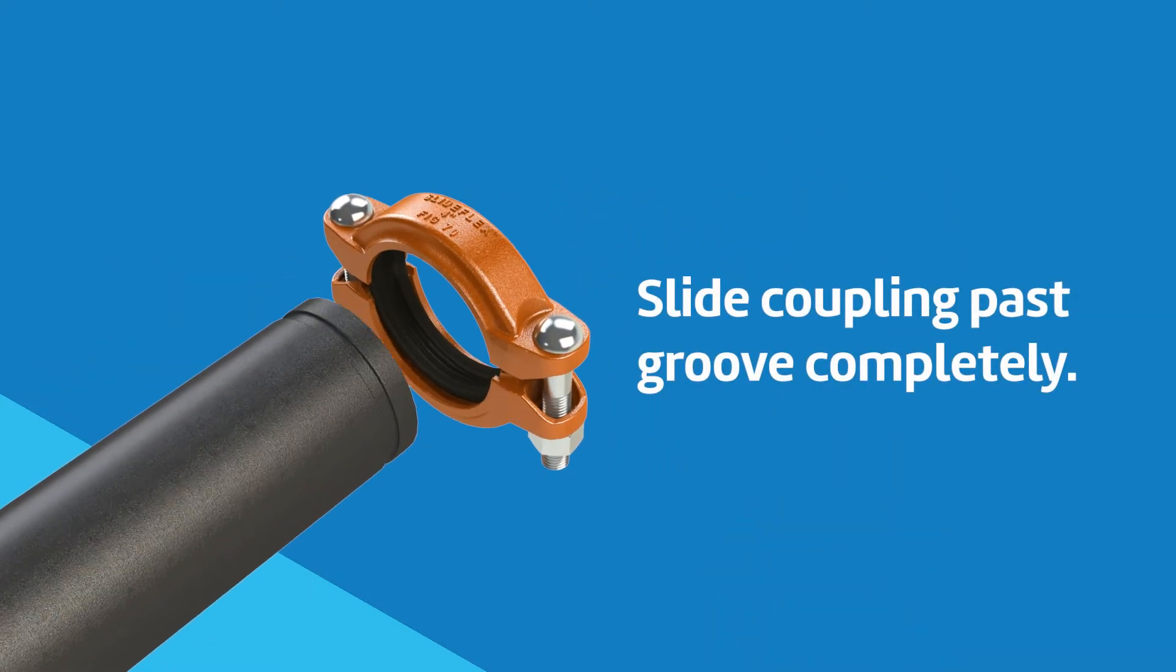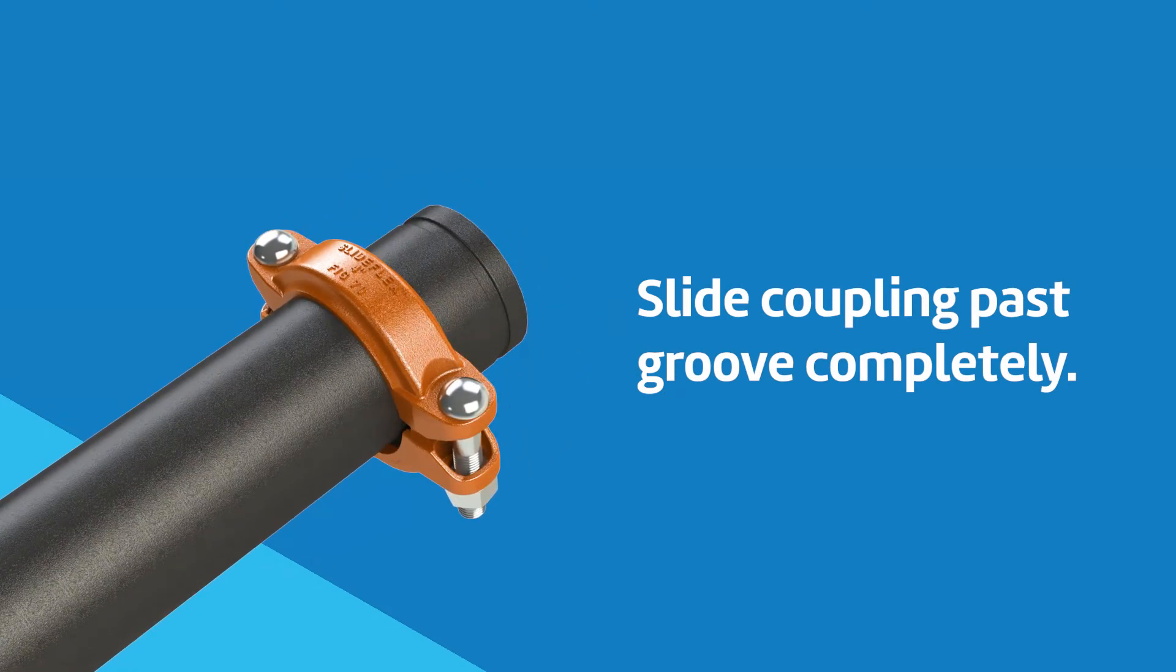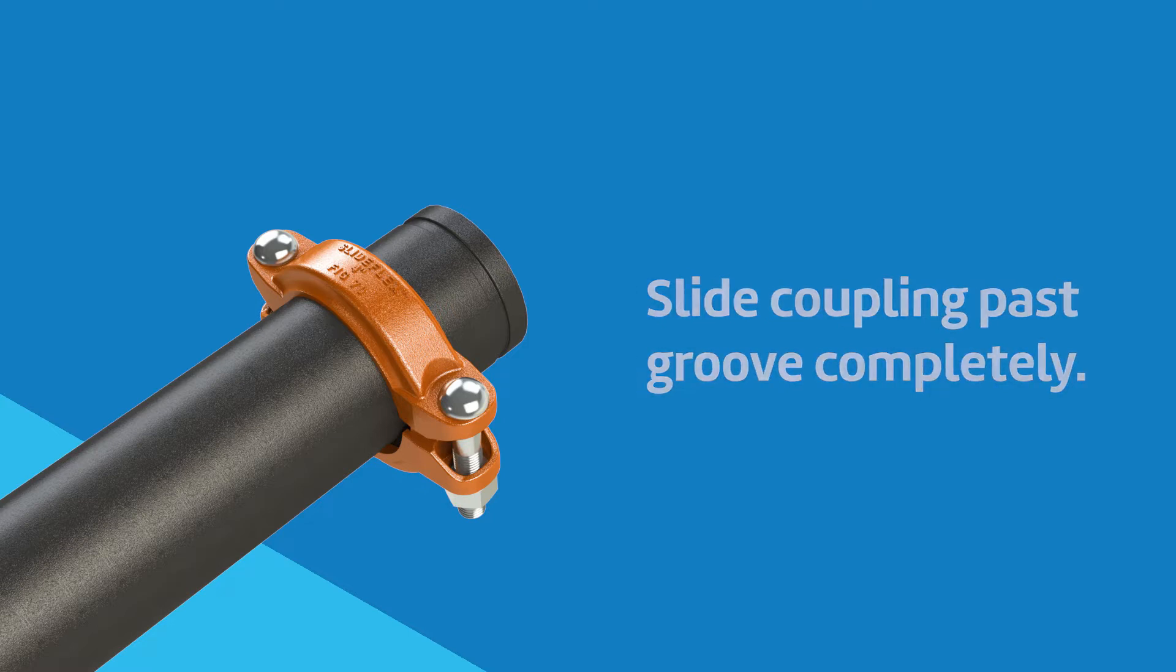For pipe-to-pipe joining, slide the figure 70 coupling past the groove on the pipe end. This will allow a clear unobstructed view for obtaining correct alignment.